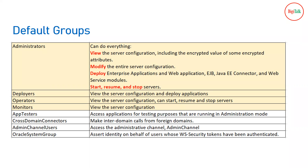If you have users you want to allow only deployment capabilities, assign them the Deployers role. If you want users to start, stop, and resume applications, assign them the Operators role. If you want users to only monitor applications or view status from the WebLogic console, assign the Monitors role. These are the four important roles you will use most of the time.